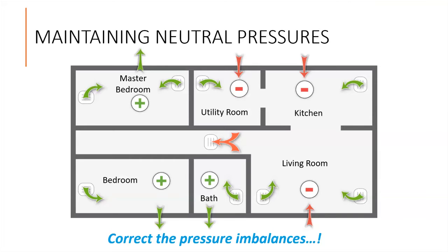This slide shows the potential for our furnace or air conditioner to pressurize individual rooms while simultaneously depressurizing the main body of a home — those parts connected to the return register. This pressure imbalance can be minimized by keeping interior doors open or with adequate gaps at the bottom of the door.